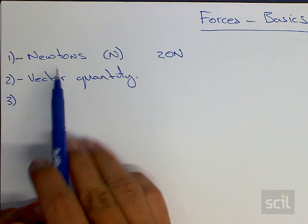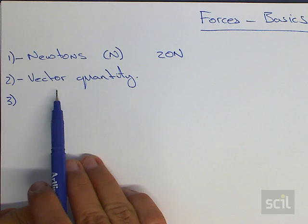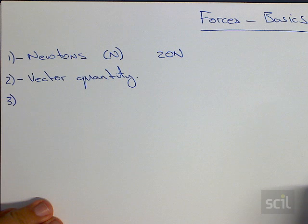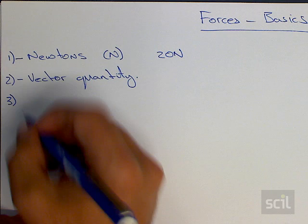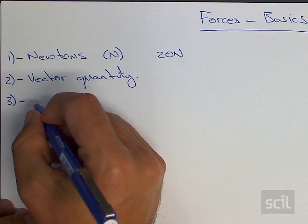Now that we know a force is measured in newtons, and that it is a vector quantity, with both a magnitude and a direction, we can also look at the main parts to a force. So the force has four main parts.